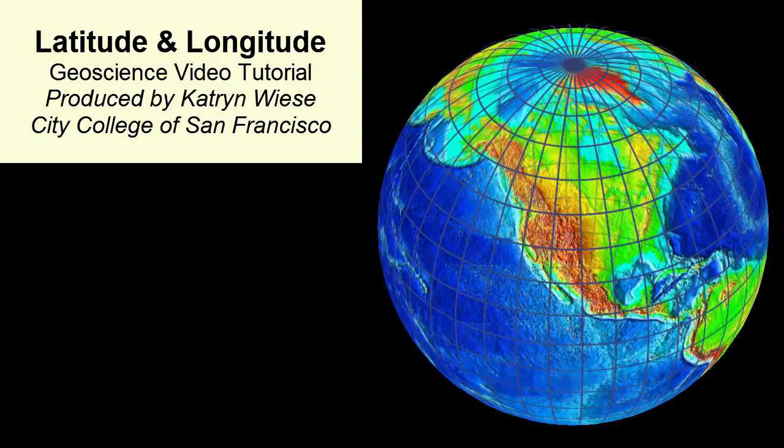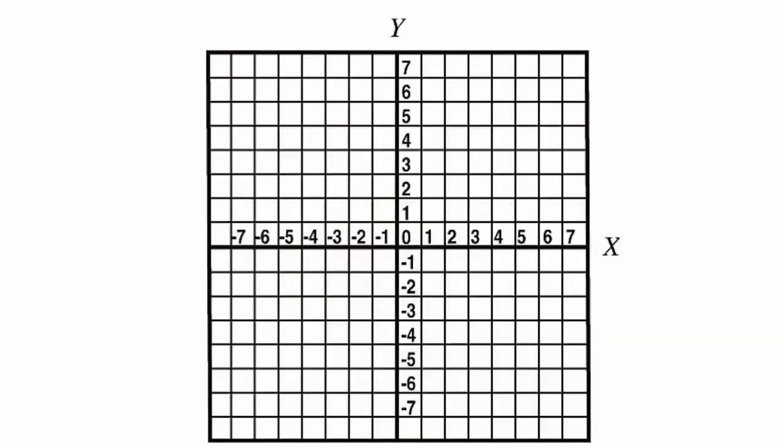We use a spherical coordinate system known as latitude and longitude. Just like a planar graphing coordinate system, we need an origin or zero reference, and we measure away from that origin in two directions.